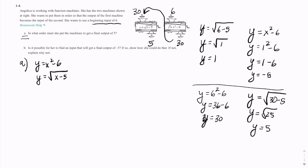Now for B, it says, is it possible for her to find an input that will get a final output of negative 5? Well, we already know that's the case, because up here, we tried that. So it says, if so, how should she do that? If not, explain why not.